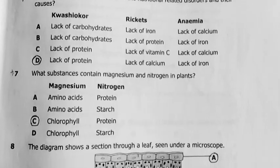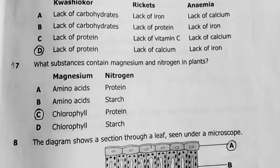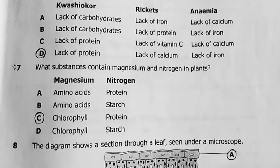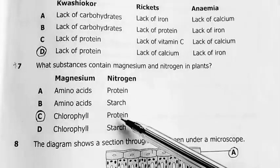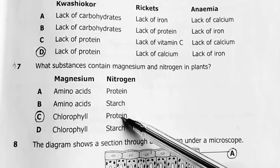Next question, which is seven. What substances contain magnesium and nitrogen in plants? Chlorophyll contains magnesium. And the nitrogen is found in proteins. My answer is C.